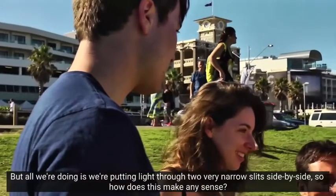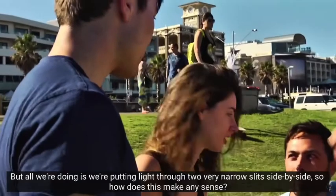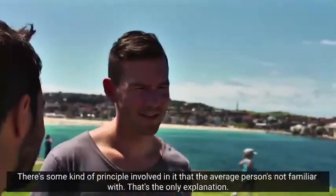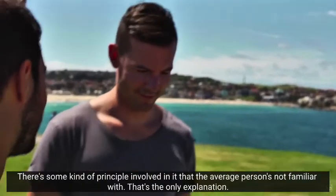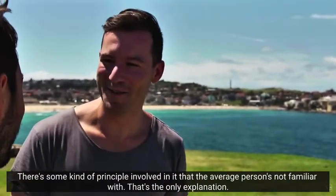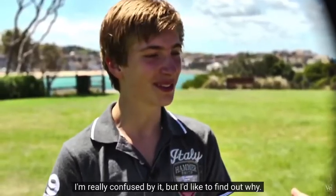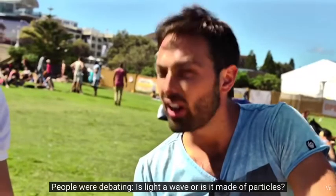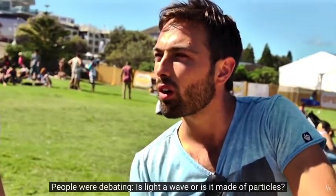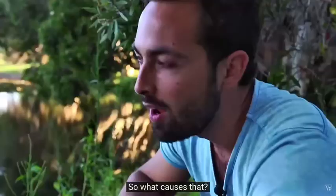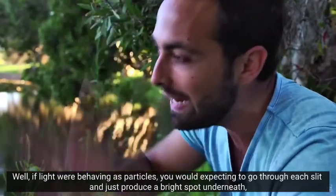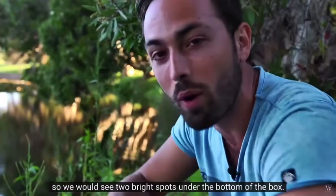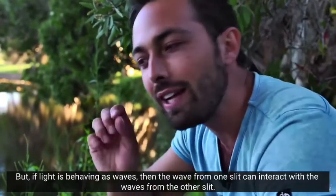All we're doing is we're putting a light through two very narrow slits side by side. So how does this make any sense? There's some kind of principle involved now that the average person is not familiar with. That's the only explanation. I'm really confused by it, but I'd like to find out why. People were debating, is light a wave or is it made of particles? So what causes that? If light were behaving as particles, you would expect them to go through each slit and just produce a bright spot underneath. So we would see two bright spots on the bottom of the box.